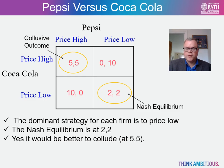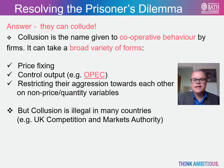Both firms know this and so they end up at the Nash equilibrium where both price low, and there is no sole incentive for either Pepsi or Coca-Cola to independently deviate. So how do firms in the real world resolve the prisoner's dilemma? They recognize their mutual interdependence and will often seek to collude. Collusion is essentially a form of cooperative behavior in which participants agree to conduct activities that will limit competition. Collusion can take a variety of forms, including price fixing or limiting output — for instance, think of OPEC, which is an international oil cartel.